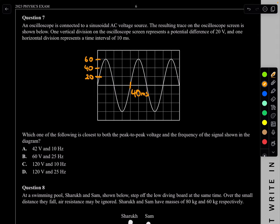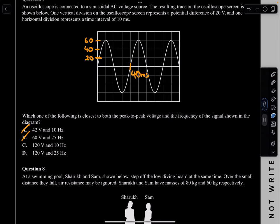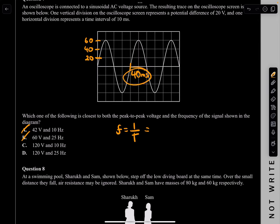We want peak-to-peak voltage and frequency. The peak voltage is 60 V, so peak-to-peak = 60 × 2 = 120 V. For frequency: f = 1/T = 1 / (40×10⁻³) = 25 Hz. So peak-to-peak is 120 V and frequency is 25 Hz — those are your answers.